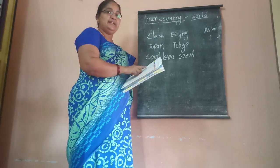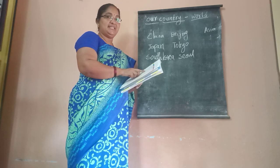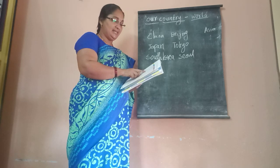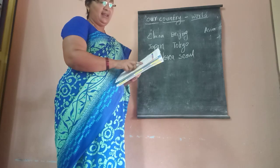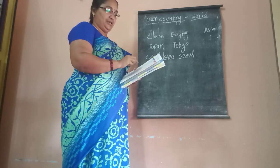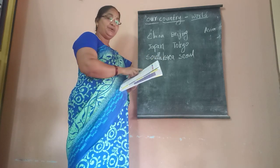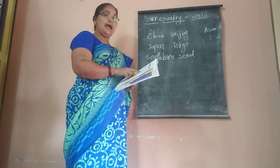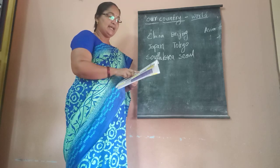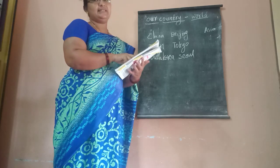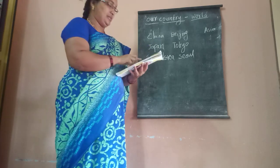Iran — its capital is Tehran, its major language is Persian, and its currency is Iranian Rial. It is in Asia. Singapore — its capital is also Singapore, its major language is Mandarin Chinese, its currency is Singapore Dollar, and it is in the continent Asia.